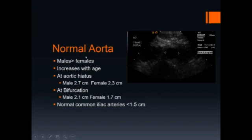The normal aorta is larger in males than in females, and it increases with age. At the aortic hiatus, the normal male aorta measures 2.7 cm; in females, it measures 2.3 cm. At the bifurcation, the aorta measures 2.1 cm; in females, it measures 1.7 cm.